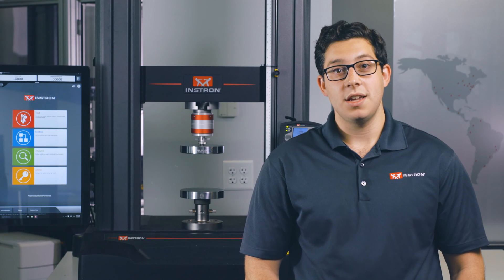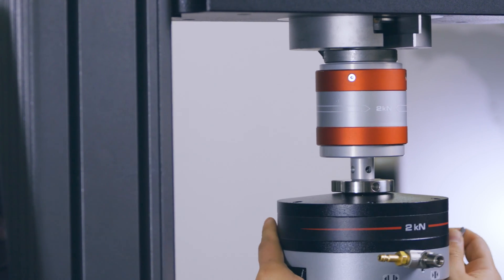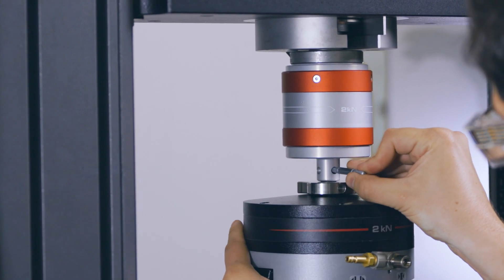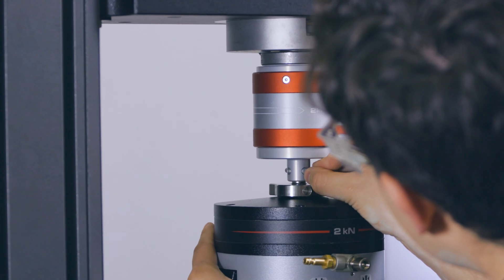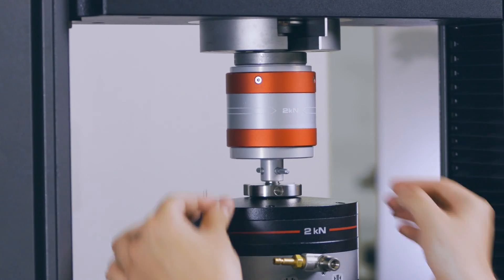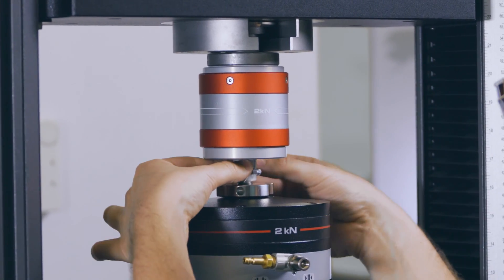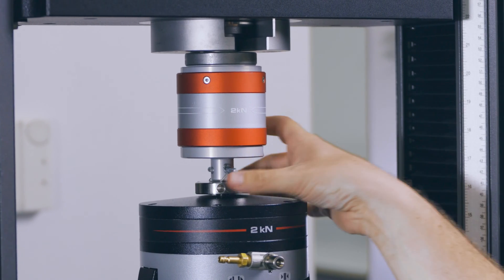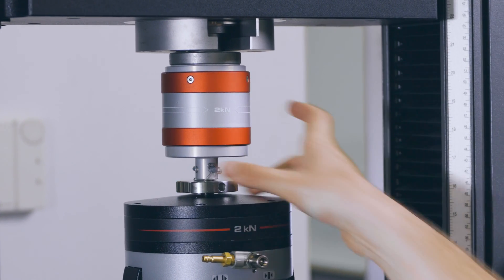All our grips and fixtures use the same pin and clevis style connection, which make it easy to quickly change fixtures as needed. Here we have a pneumatic grip that we are attaching to the load cell. Set the grip into the load cell, line up the holes and secure the grip with the pin. In order to prevent lateral motion of the pin, which could happen during a cyclic test, install the pin clip. Now tighten the check nut to the load cell.